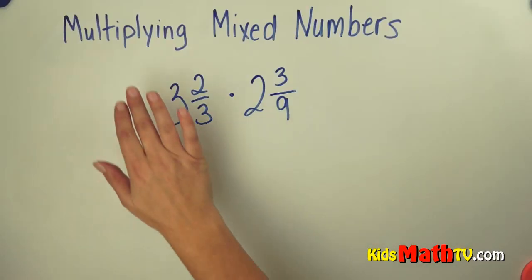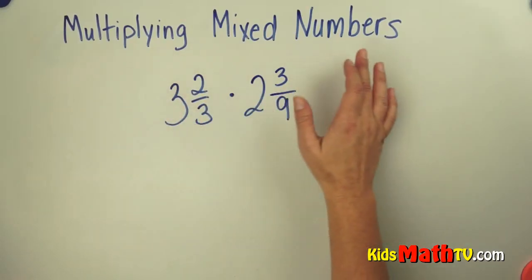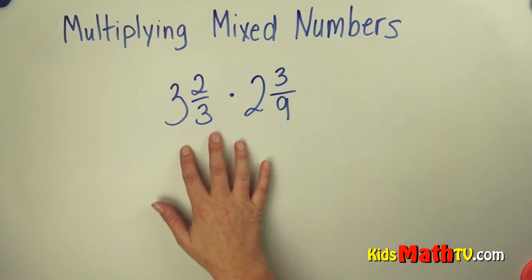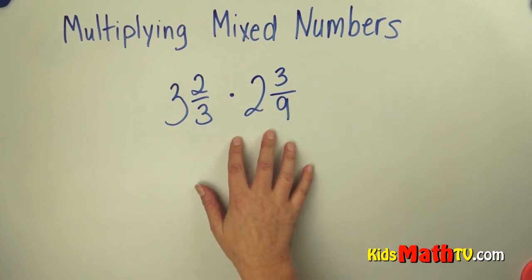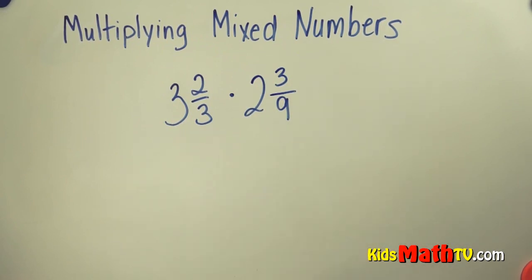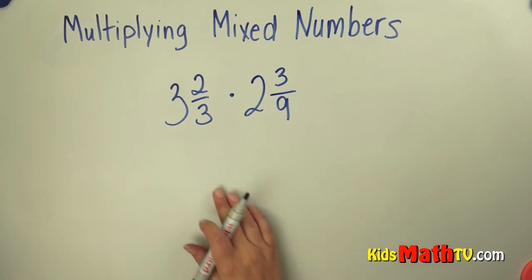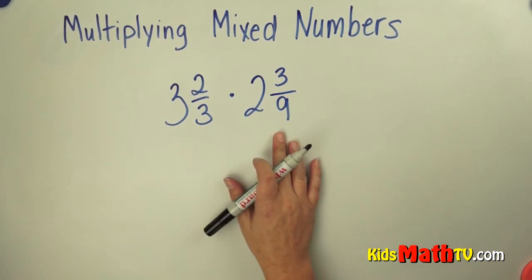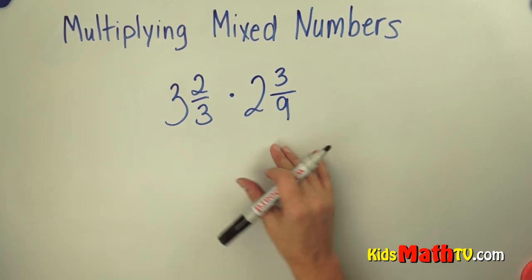In this lesson you will learn about multiplying mixed numbers. Here we have two mixed numbers that we're multiplying together. The first step is to make these mixed numbers into improper fractions.